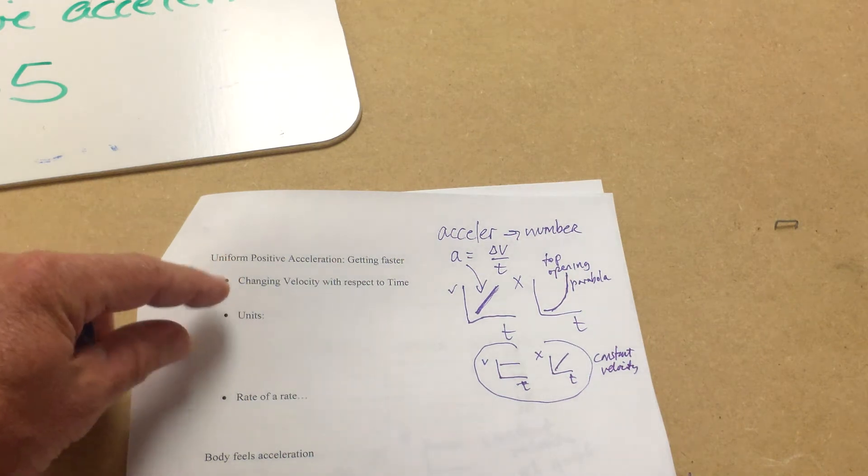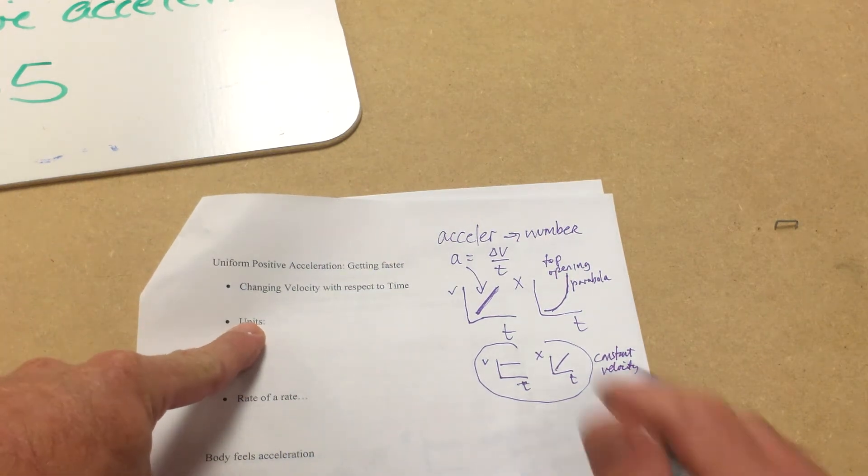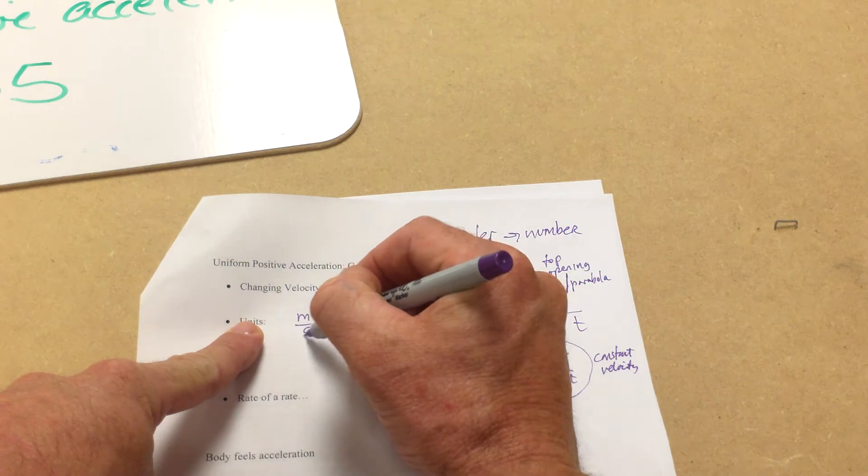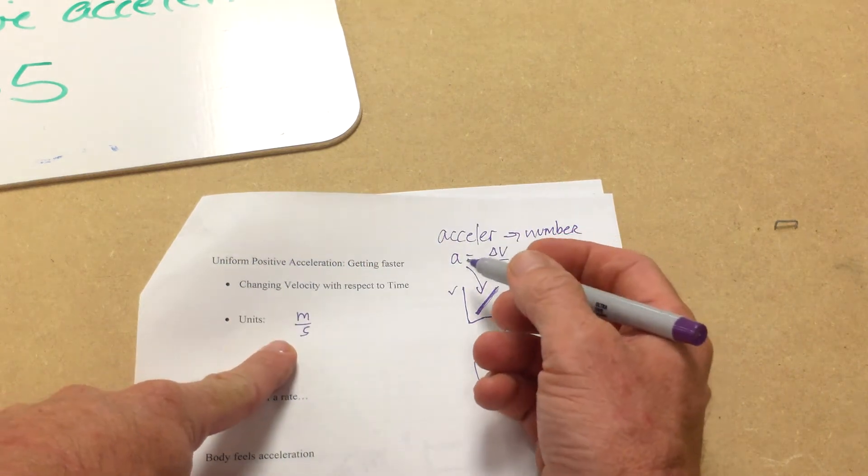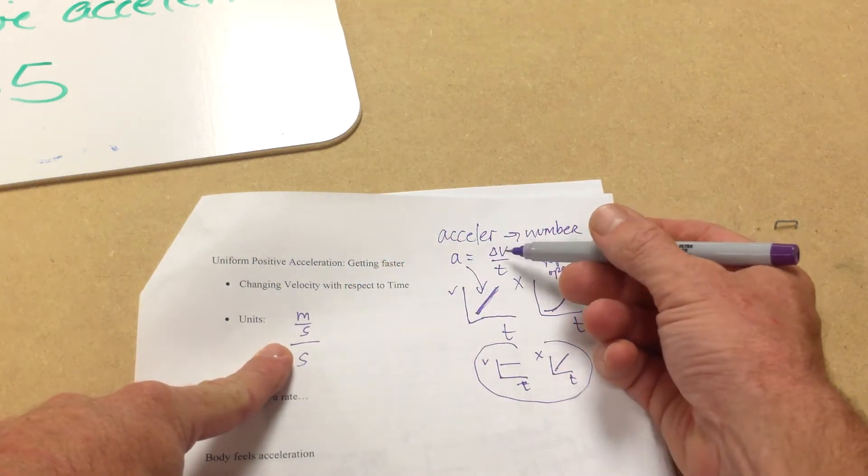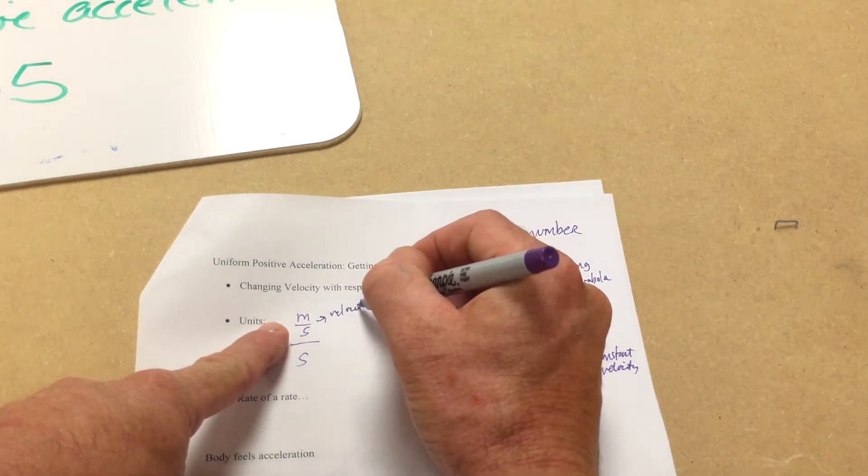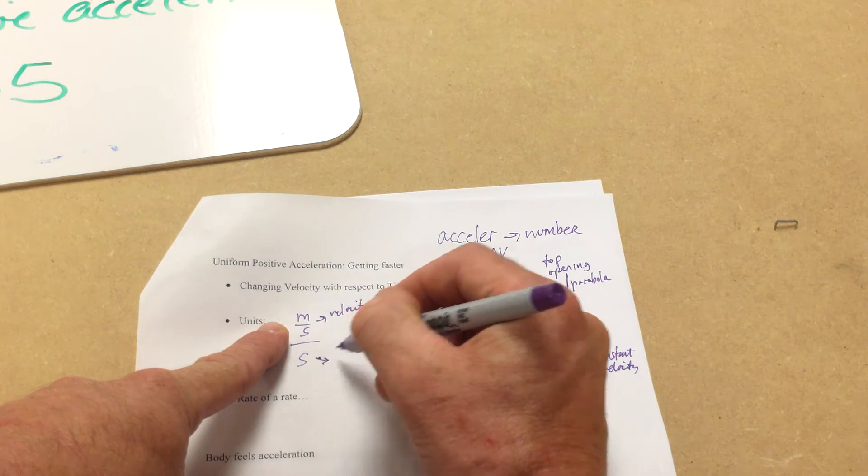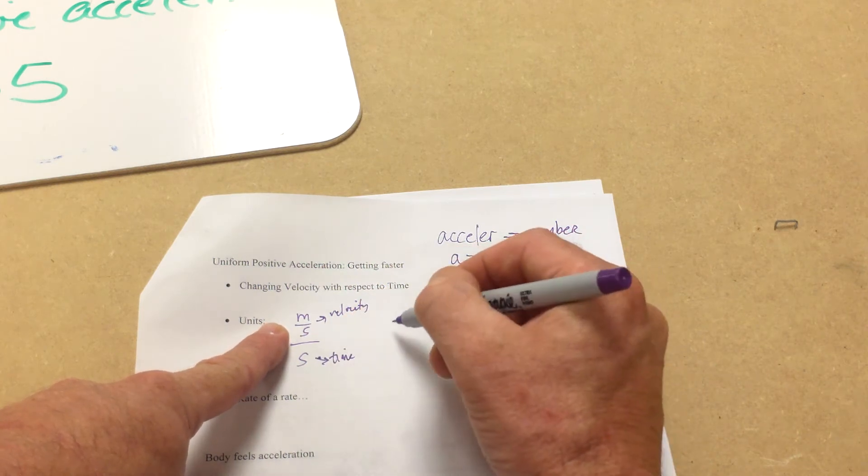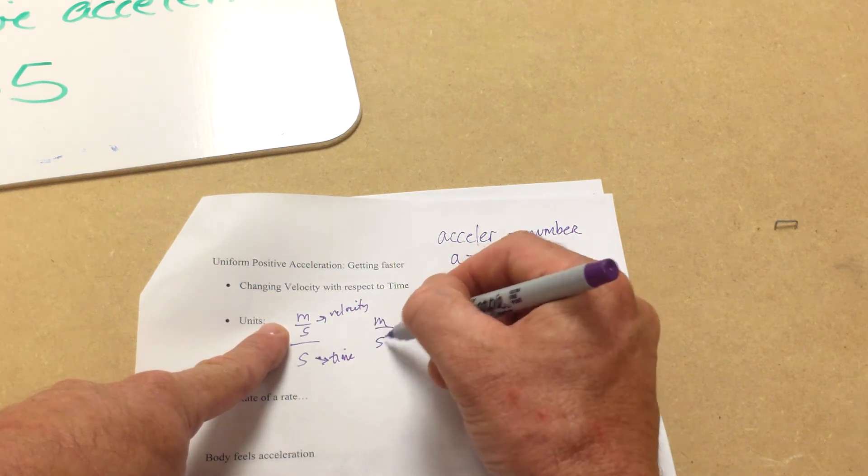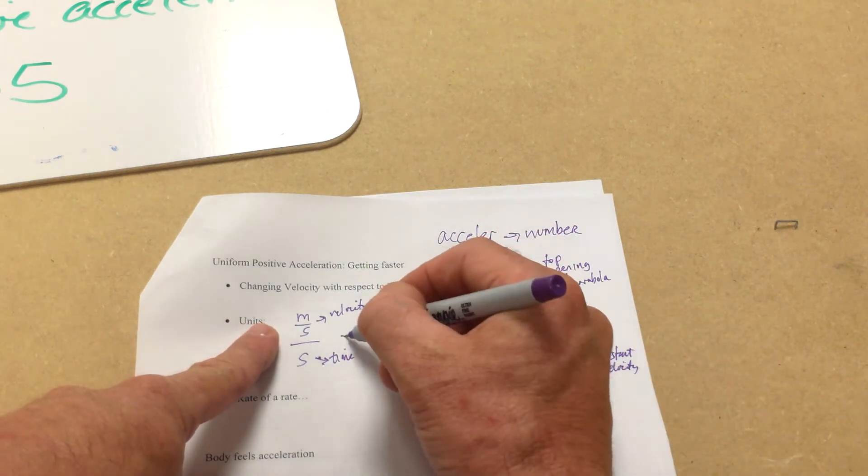Units then, in the metric system, we then have a velocity unit divided by a time unit. There's our velocity unit and there's our time unit. Some textbooks will say this is really meters per second squared, and that's equivalent.